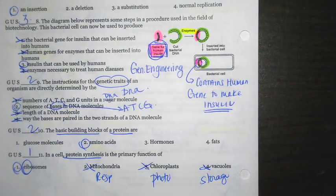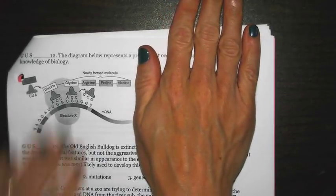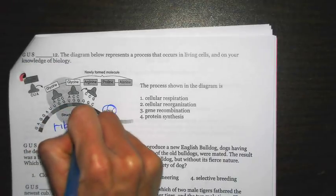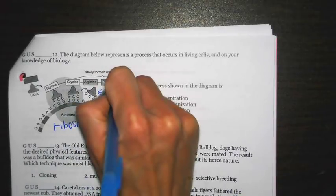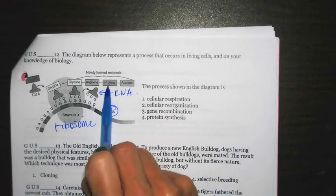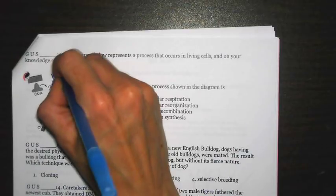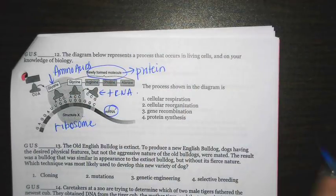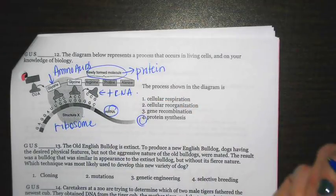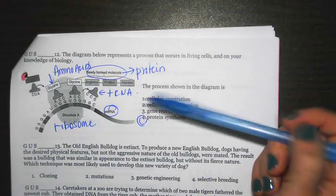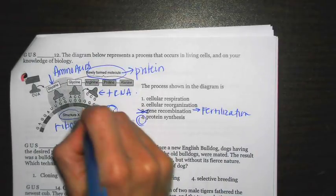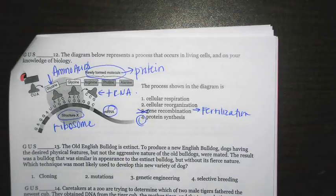Last couple on the next page. The diagram below represents a process that occurs in living cells. The process shown in the diagram is. Again, before you even look at this, analyze the picture. Here, this is a structure. Messenger RNA. Remember, messenger RNA brings the code to the ribosome. These guys here are supposed to be tRNA, although it's not labeled. These glycine, proline, alanine, those are all examples of amino acids. And finally, the newly formed molecule is supposed to be a protein. So the process shown in the diagram is going to be protein synthesis. I think when we were going over this, a lot of people picked three because they realized that those were genes. Gene recombination really means fertilization. Fertilization is not occurring here. This says structure X. Again, it's really important for you to analyze the diagrams before you move on with the questions.